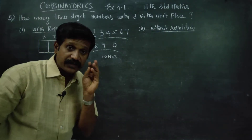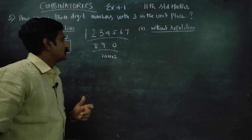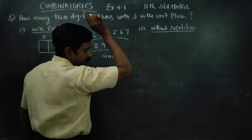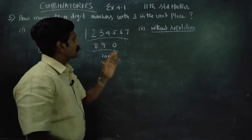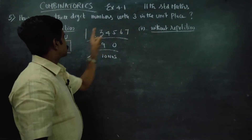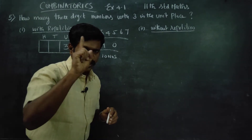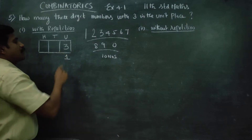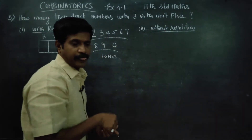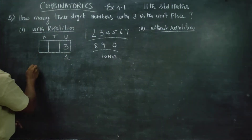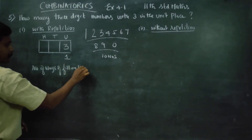Which is the conditioned place and which is the open choice place? The unit place is conditioned — it is not an open choice. It is closed. The unit box is reserved only for 3. So the number of ways of filling the unit place is just 1.